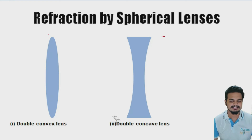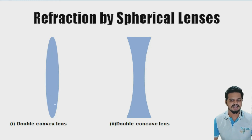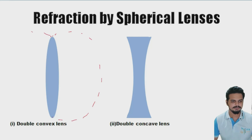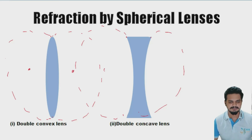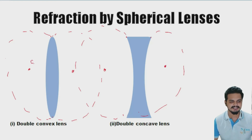If you watched part one of this video, this terminology will be familiar. Just like spherical mirrors have a center of curvature, spherical lenses have two imaginary spheres associated with them. For a convex lens they are on each side; for a concave lens similarly. The centers of these two imaginary spheres are called the centers of curvature, labeled C1 and C2.